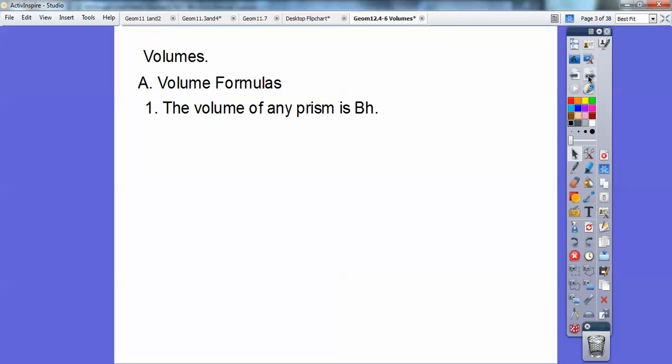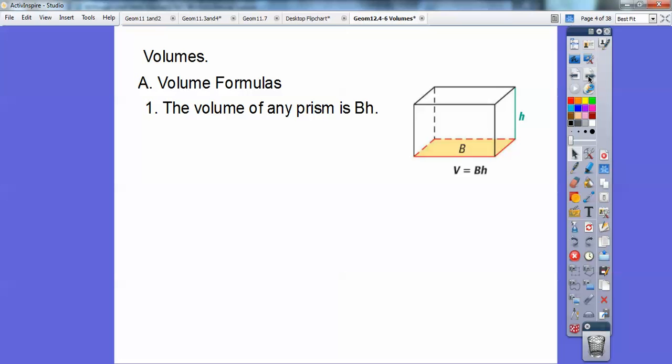Let's go through. The volume of any prism is base times height. So if you have this prism right here, you get the area of the base and then multiply that times the height. Volume is always in cubic units, so like centimeters to the third power or centimeters cubed or feet cubed.